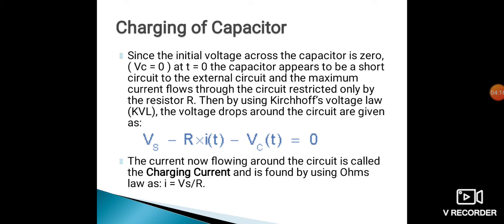The current now flowing around the circuit is called the charging current — the current which flows during this duration is called the charging current. It is found using Ohm's law. The formula for Ohm's law is V equal to I times R. Here we need to find the value of current, so we use I equal to V divided by R. Since V is the supply voltage, I will be equal to VS divided by R.